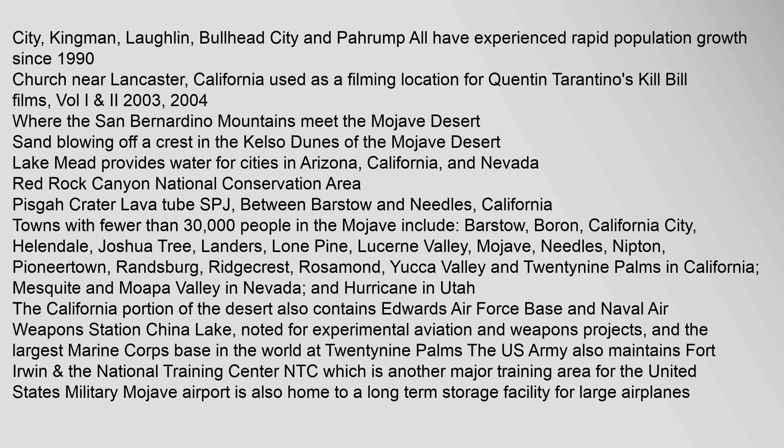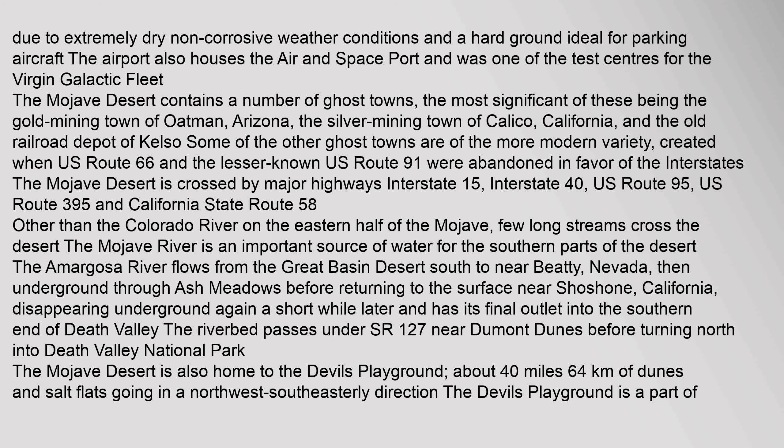A church near Lancaster, California was used as a filming location for Quentin Tarantino's Kill Bill films, Volume 1. Due to extremely dry, non-corrosive weather conditions and hard ground ideal for parking aircraft, the airport also houses the Air and Space Port and was one of the test centers for the Virgin Galactic Fleet. The Mojave Desert contains a number of ghost towns, the most significant being the gold mining town of Oatman, Arizona.